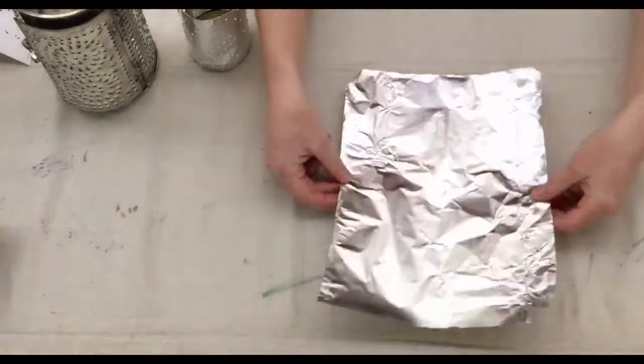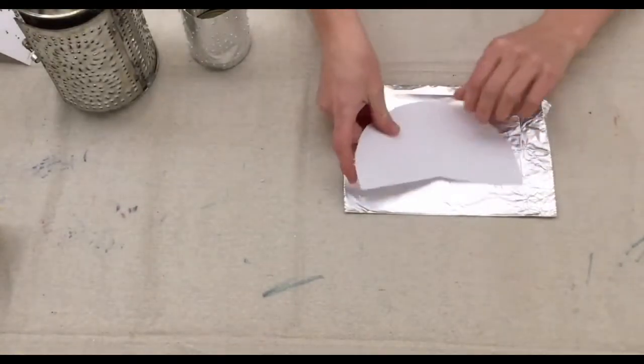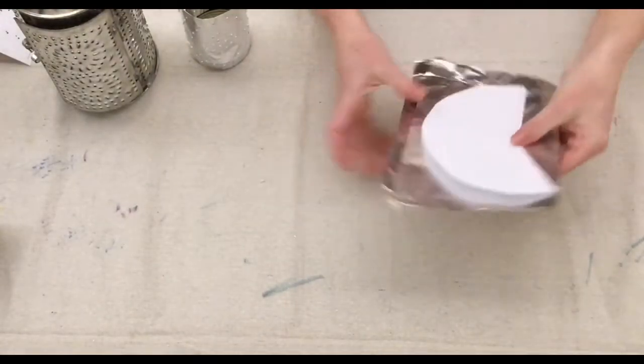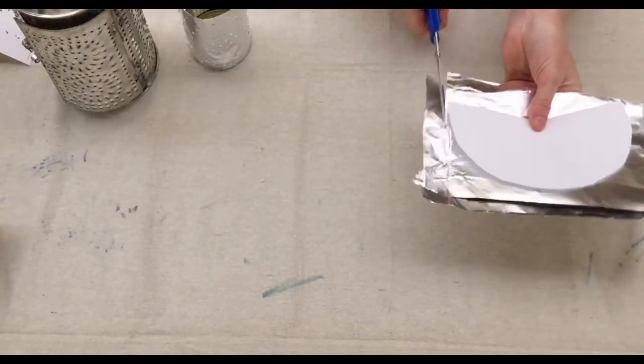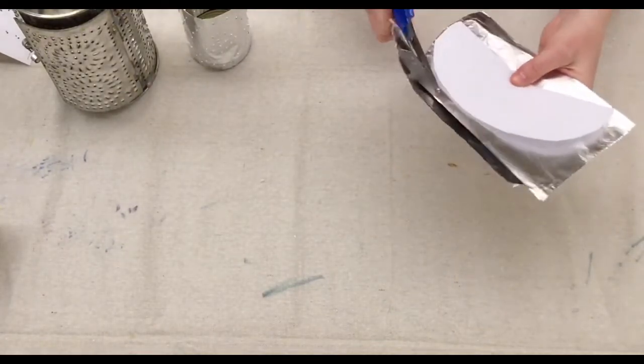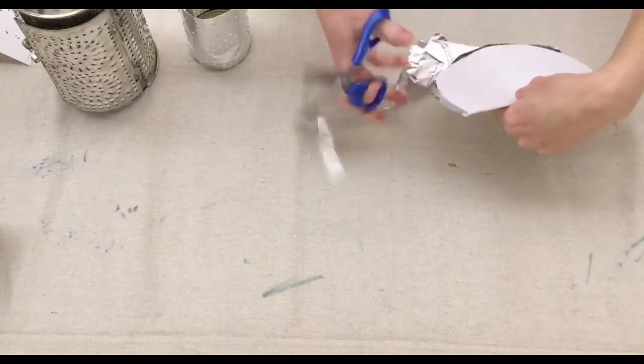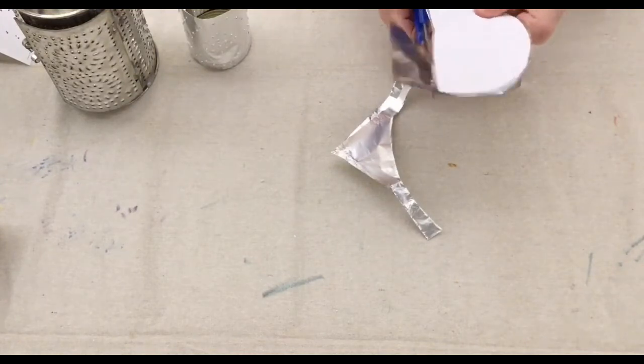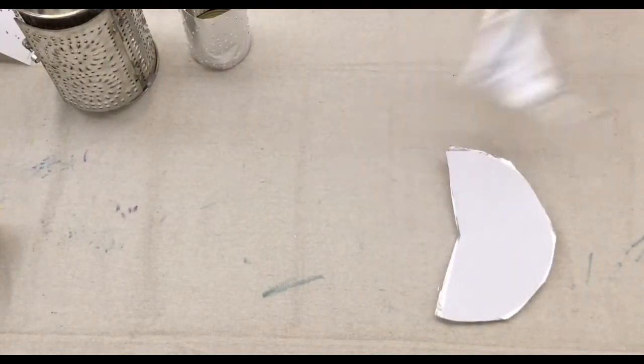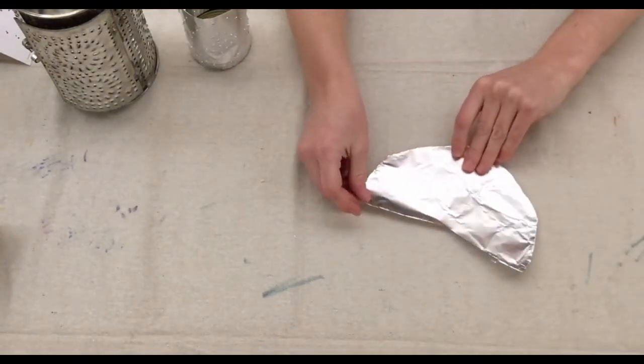Now it's time to make the lid for our lantern. I'm going to take another sheet of aluminum foil and fold it in half. Then I'm going to take the template for the lid, which is a little more than a half circle, and I'm going to cut that out. Now I'm going to use kind of an older pair of scissors, because cutting tin foil can dull your scissors. It's not going to do too much damage if it's just one punched tin lantern, but if you're making several of these, you may want to dedicate a special pair of scissors for the task.